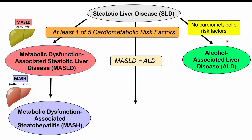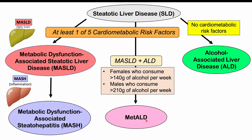If a patient has both alcohol-related liver damage and at least one of those five cardiometabolic risk factors, they essentially have MASLD plus ALD — a new condition known as MET-ALD. This applies to patients with at least one cardiometabolic risk factor who also consume a certain amount of alcohol per week: at least 140 grams per week in females, and at least 210 grams per week in males.